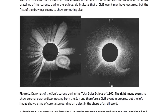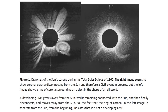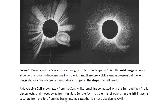The first of the drawings seems to show something else. This one on the right seems to indeed show a coronal plasma disconnecting from the sun — you can see it curving, still curving away towards the sun. So it may have been connected on one side and then disconnected, and therefore may be showing a CME event in progress. But this drawing shows a ring of corona surrounding an object in the shape of an ellipsoid, and it doesn't seem to be connected to the sun at all. The fact that the ring of corona in this left image is separate from the sun from the beginning indicates that it is not a developing CME.